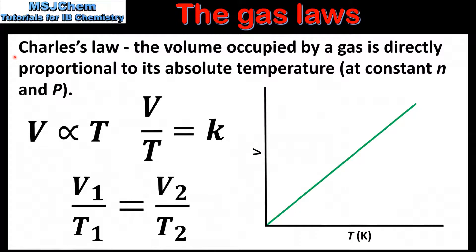Next we have the relationship between volume and temperature at constant pressure, also known as Charles' law. This states that the volume occupied by a gas is directly proportional to its absolute temperature in Kelvin. In equation form this can be represented as V is directly proportional to T, or V over T equals a constant K.